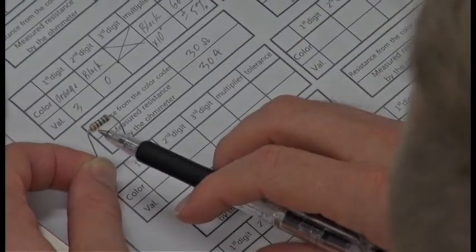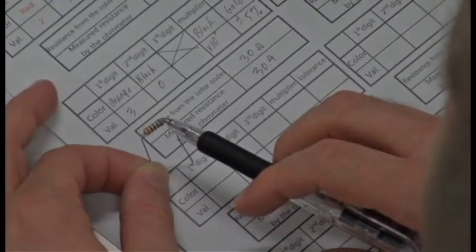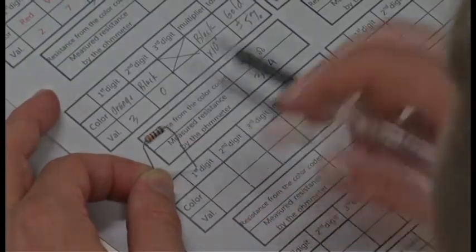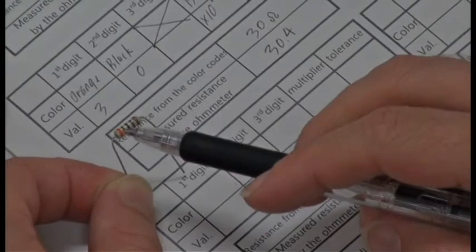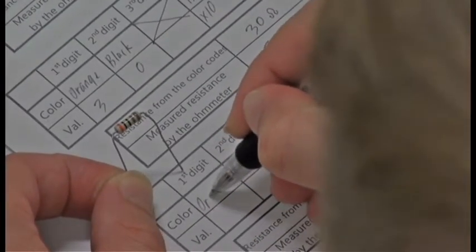First band is orange. Second band is black. Third band is black. The fourth band or multiplier band is brown. And the fifth band or tolerance band is gold.